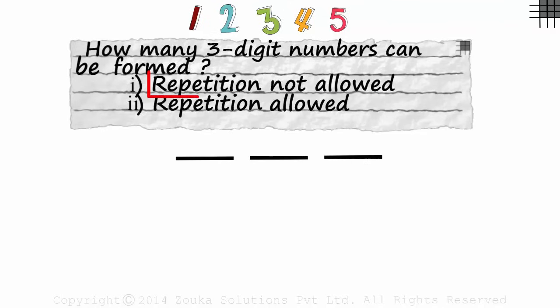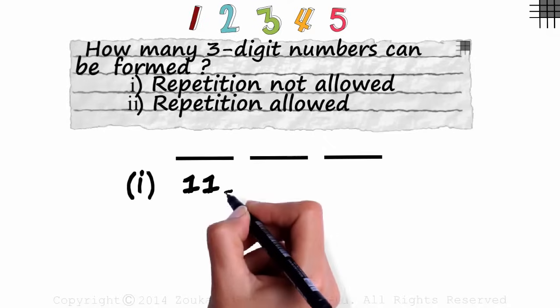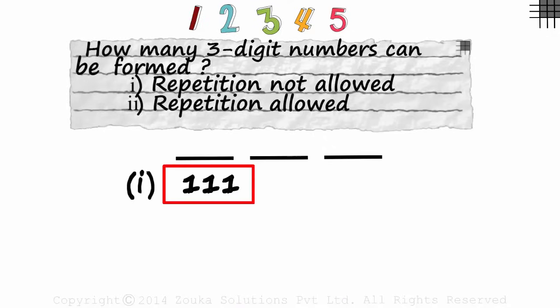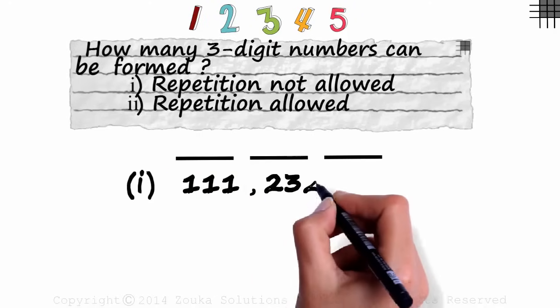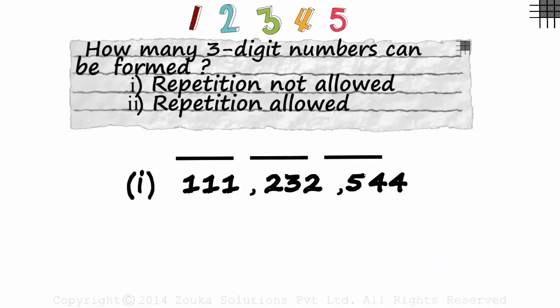Let us understand the first condition. Repetition is not allowed. Look at the number 111. This is a three-digit number, but the digit 1 is repeated. Look at 232 or 544. The digit 2 is repeated here, and the digit 4 is repeated here. By repetition not being allowed, they mean that numbers like these should not be considered. Each of the digits in the slot should be different.